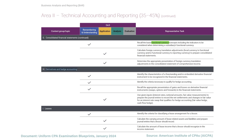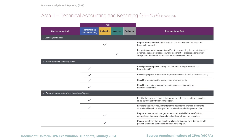Then we have derivatives and hedge accounting — the different types of derivatives and how you can use them to hedge against losses in investments, including interest rate swaps, options, and forward contracts. From there, we have lease accounting specifically from the perspective of the lessor: the carrying amount of assets and liabilities, what we recognize as income in the income statement, and leaseback transactions.